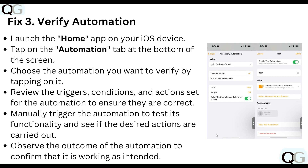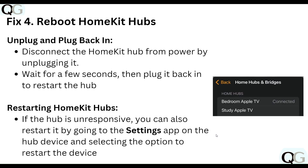The fourth step is to reboot the HomeKit hub. Unplug and plug back in — disconnect the HomeKit hub from the power by unplugging it, wait a few seconds, then plug it back in to restart the hub. If the hub is unresponsive, you can also restart it by going to the Settings app on the host device and selecting the option to restart the device.